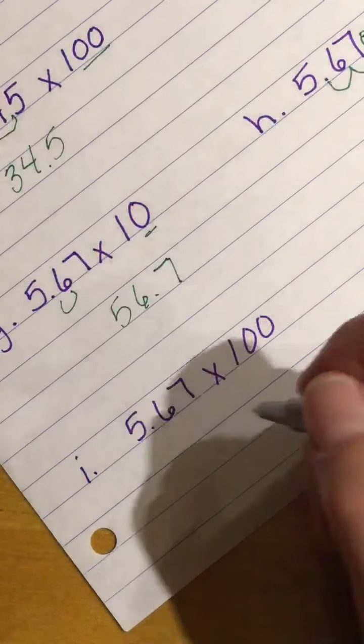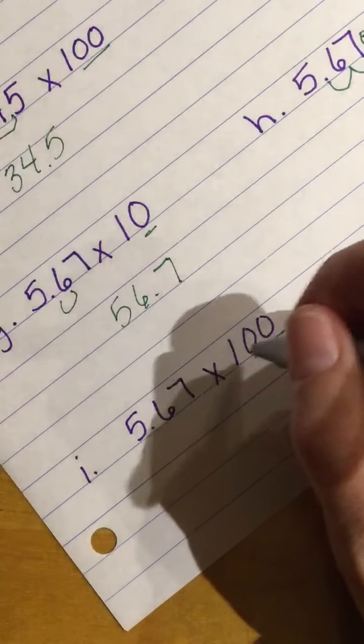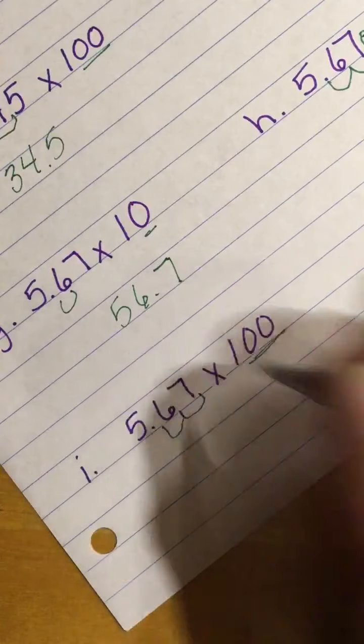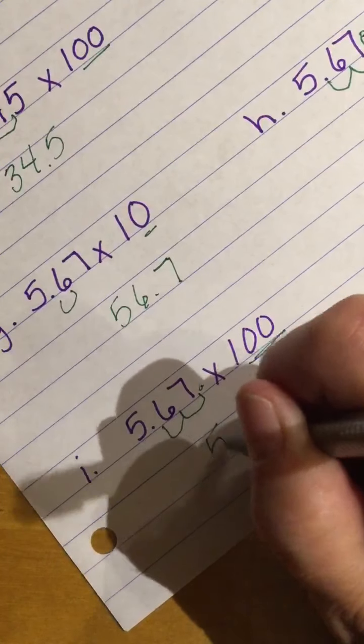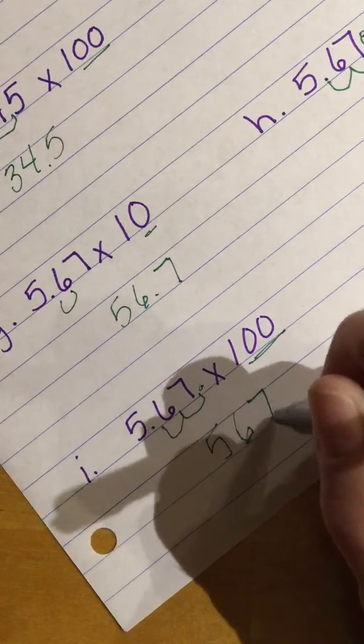Next problem, I have two 0s. My voice is getting all funny. 1, 2. My decimal ends up here. I have 567.